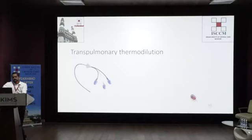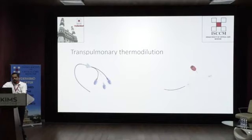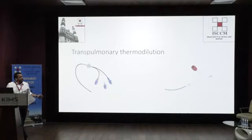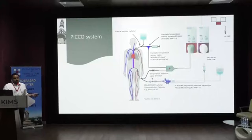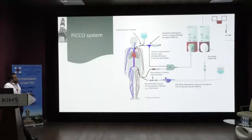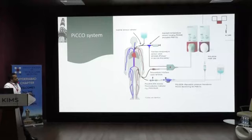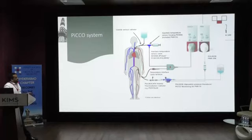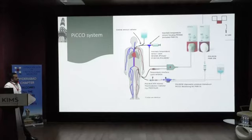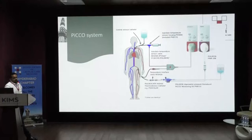For transpulmonary thermodilution, you need to insert two catheters: a central line with a thermistor port and an arterial line specific to the PICO system, which comes with a temperature sensor. This is how the PICO system looks on a real-time patient. The central line is connected to the monitor, which measures the temperature of the cold saline injected. It travels through the right side of the heart to the left side, and you place a femoral arterial line with a temperature sensor interfaced to the same monitor.